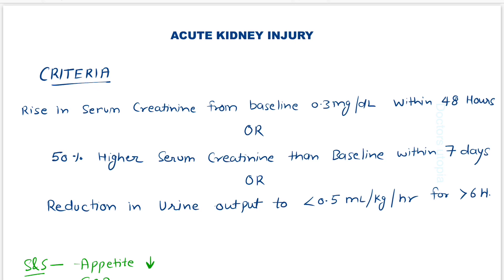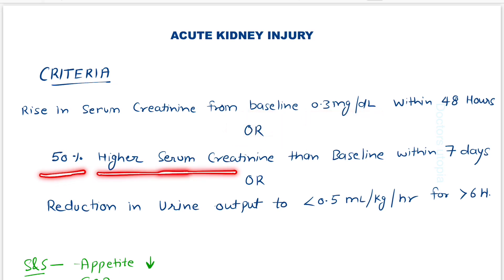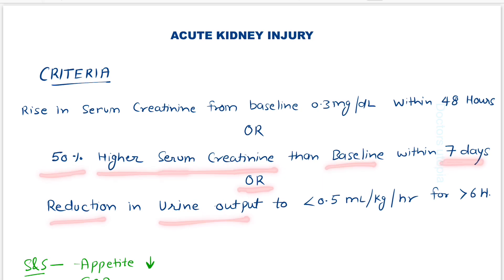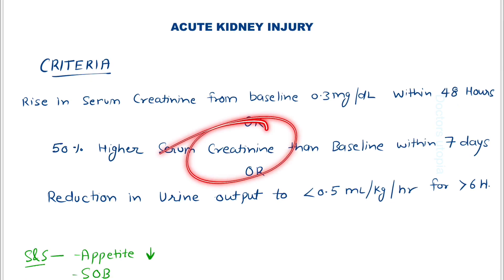What's the criteria when we can say that this patient has acute kidney injury? Whenever there is a rise in serum creatinine from baseline of 0.3 milligrams per deciliter within 48 hours, or 50% higher serum creatinine than baseline within seven days, or reduction in urine output to less than 0.5 milliliters per kg per hour for more than six hours.